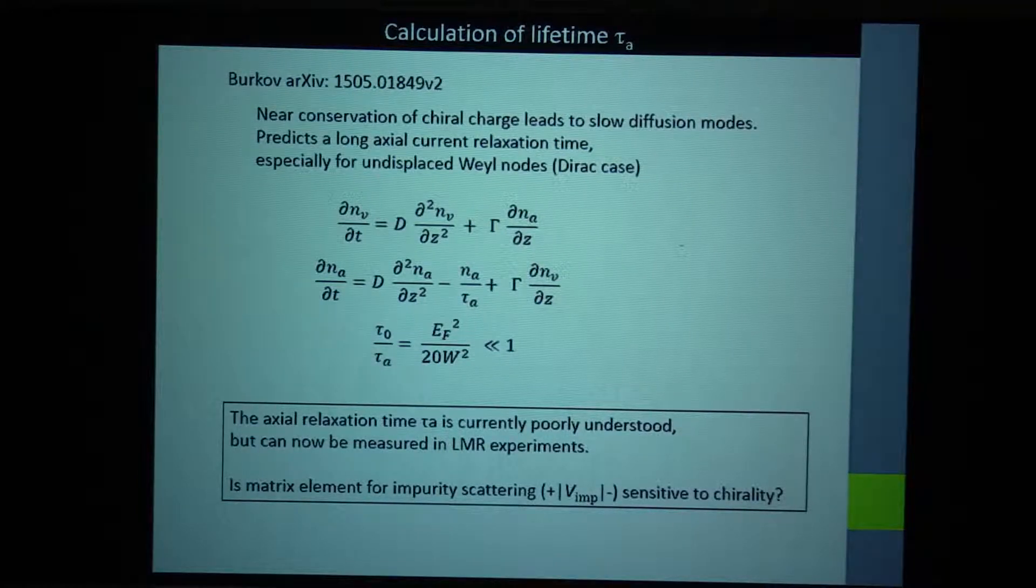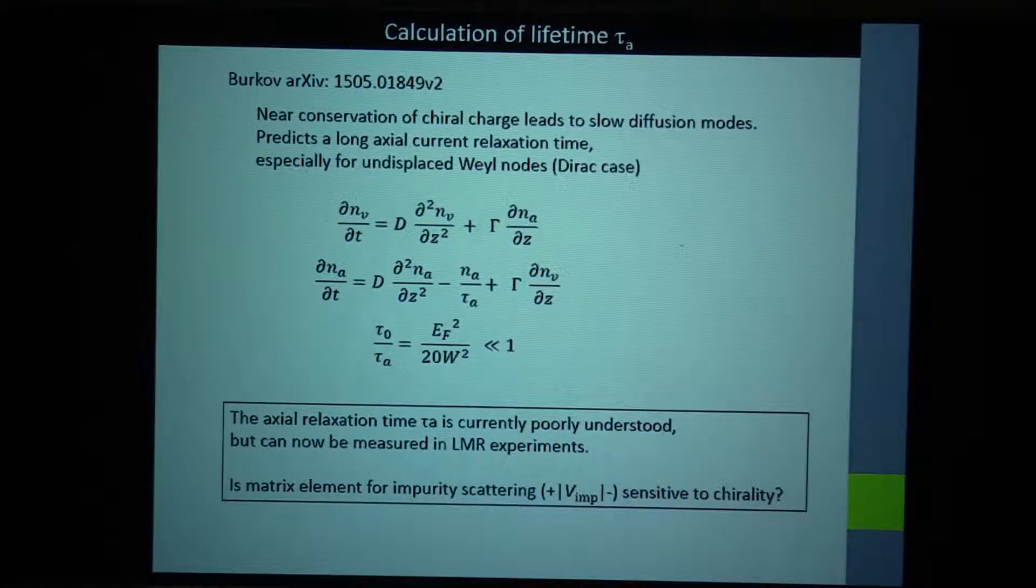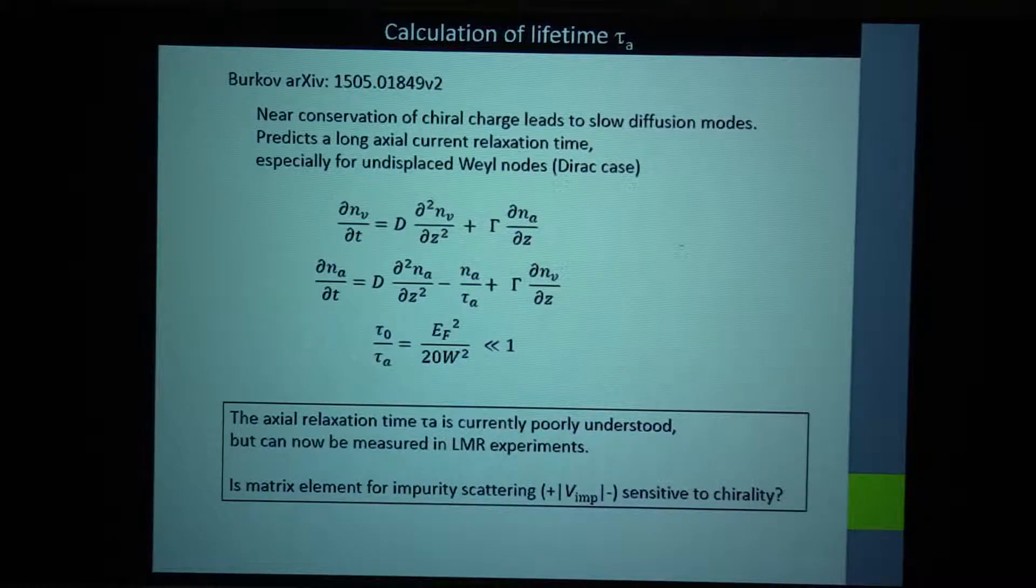Yet another factor was pointed out to me by Boris Spivak, that impurity scattering, which proceeds by this matrix element, may be in fact sensitive to the relative chiralities of the two states. And this could be heavily suppressed. So therefore, the backscattering rate would be suppressed as well. So this is another interesting possibility. But the point is I'm not going to answer the question now, but the point is now experiment can actually make contact with calculations in a rather direct way, as the measurements improve, and one can make all kinds of measurements that are predicted.